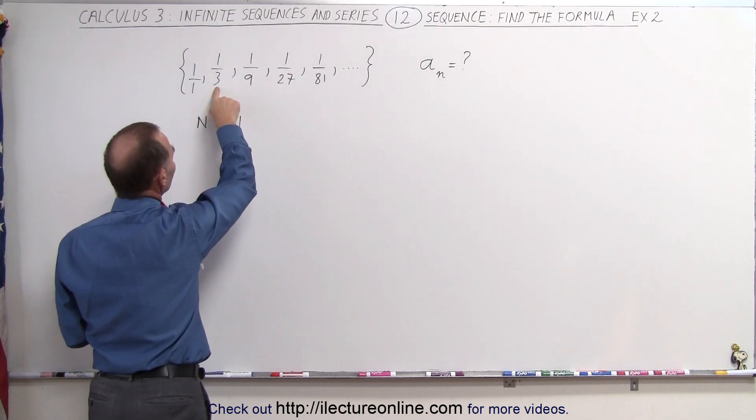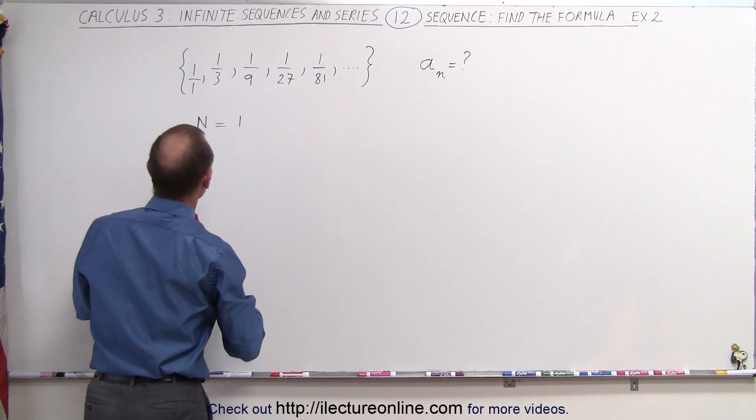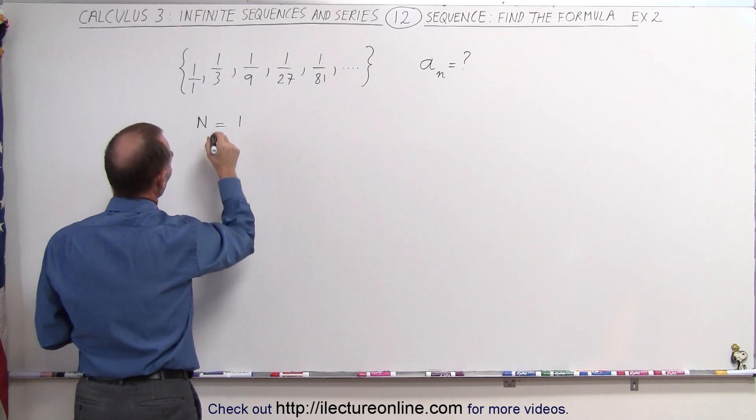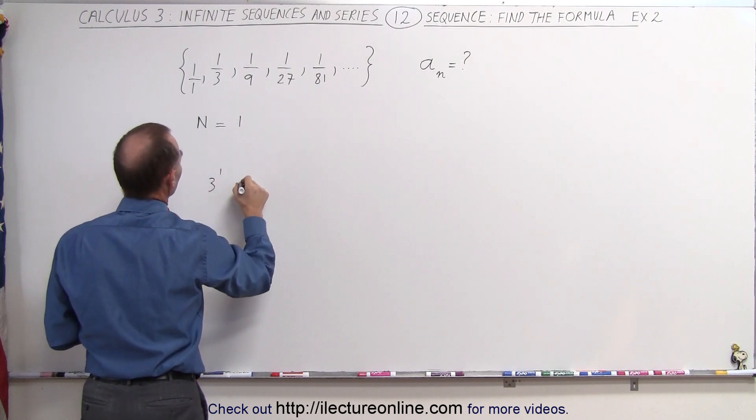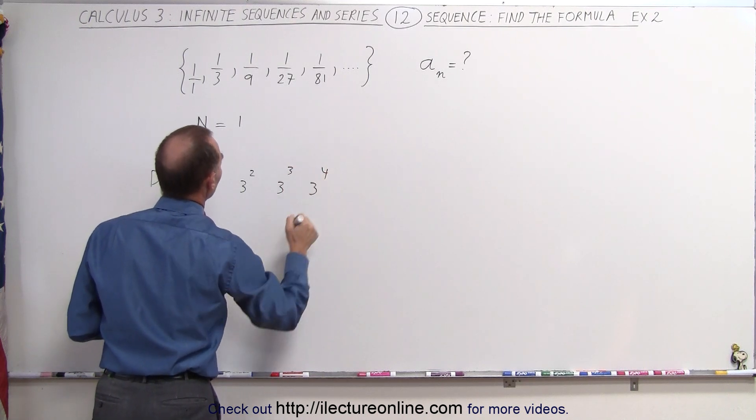This can be written as 3 to the first power, 3 to the second power, 3 to the third power, and so forth. So on the denominators, you can see that we have 3 to the first power, 3 to the second power, 3 to the third power, 3 to the fourth power.